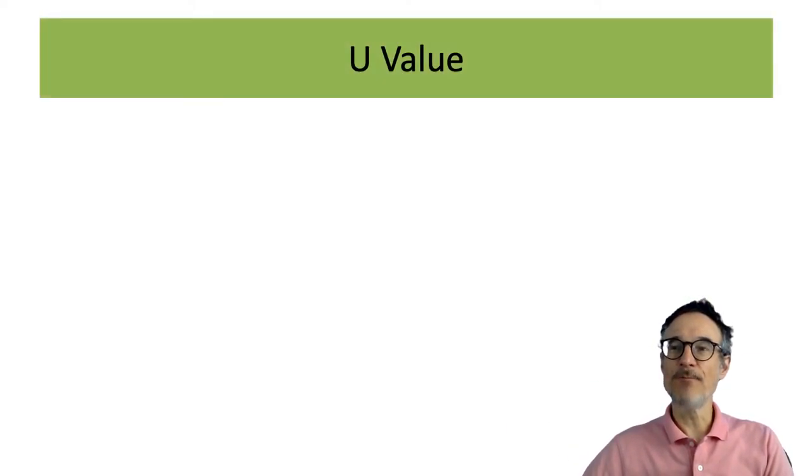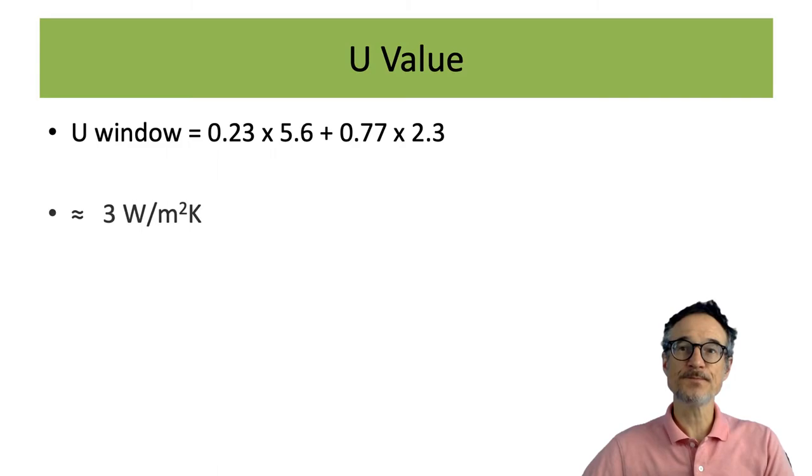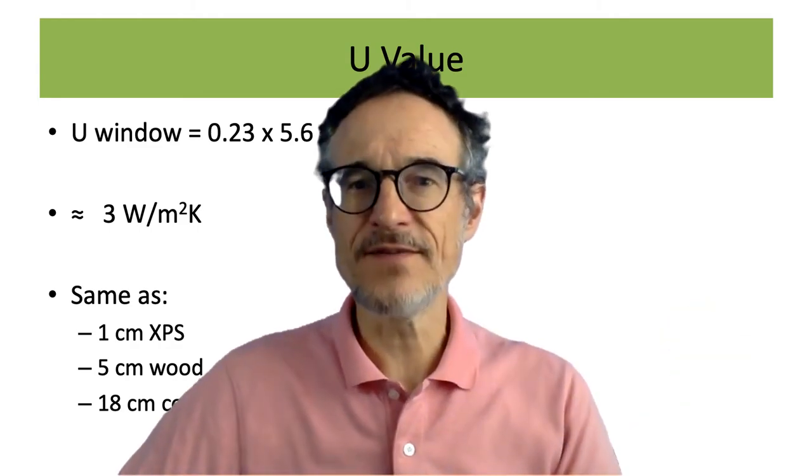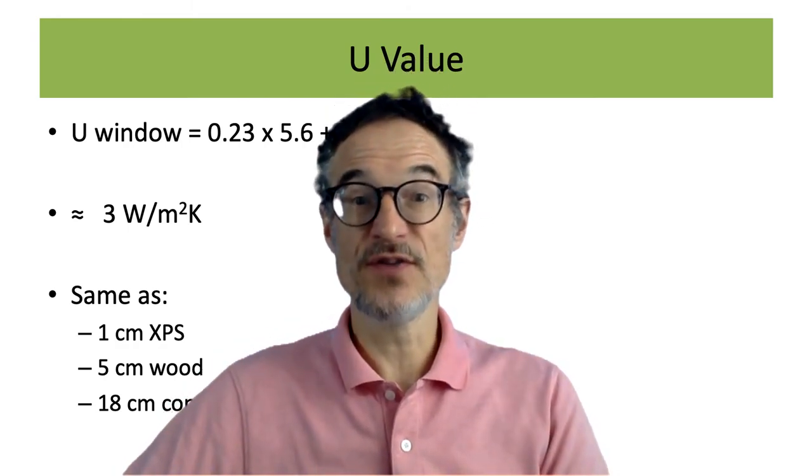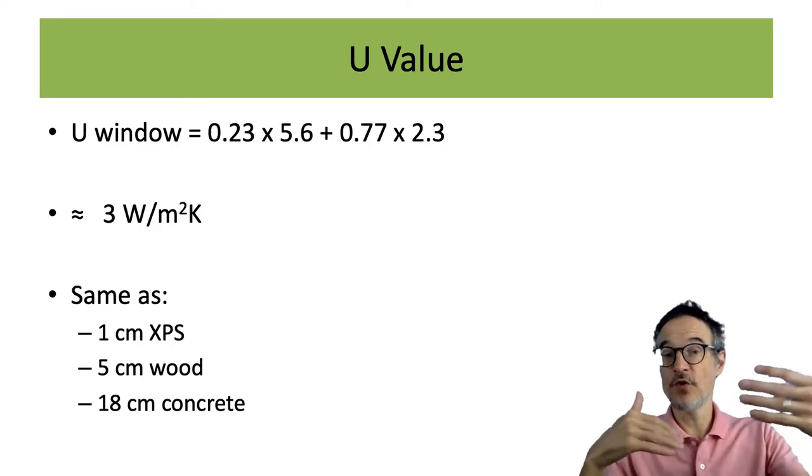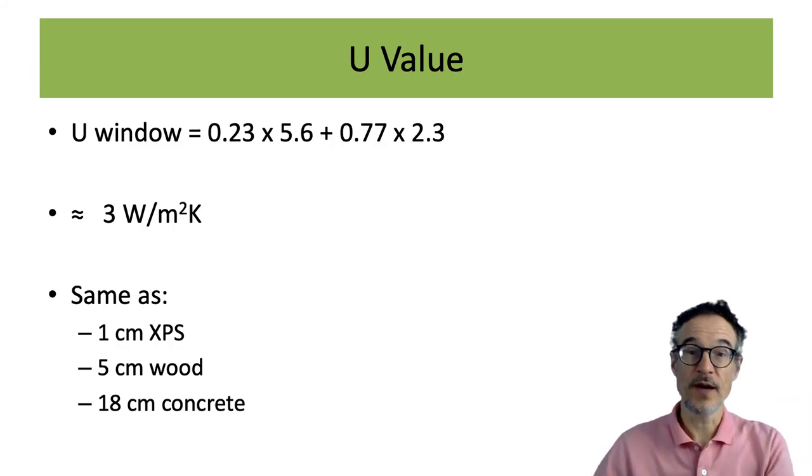And so we can put these all together, and we get around so that the glass is doing better than the frame, and it comes to something like three watts per square meter Kelvin. I don't think we can really give a more accurate answer than three. It's around three. This would be the same as one centimeter of XPS, same as five centimeters of wood, the same as 18 centimeters of concrete, just to compare the performance of the glass with what you might have in the walls.